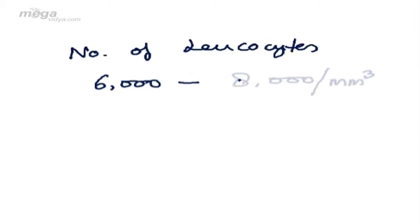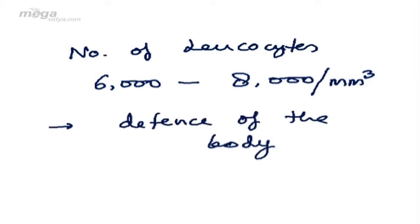The number of leukocytes varies from 6,000 to 8,000 per millimeter cube. The function of these cells is defense of the body.